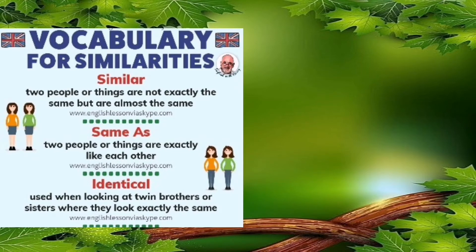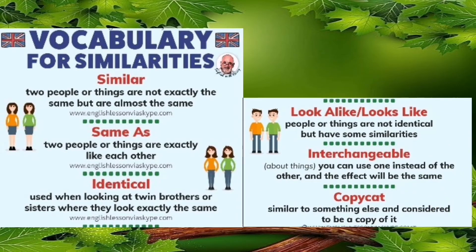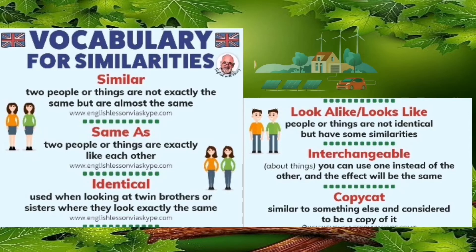Here are some vocabulary words for similarities. The first one is 'similar,' which means two people or things are not exactly the same but are almost the same. Second, 'same as' means two people or things are exactly like each other. Third, 'identical' is used when looking at twin brothers or sisters who look exactly the same. Next, 'look alike' or 'looks like' means people or things are not identical but have some similarities. 'Interchangeable' means about things you can use one instead of the other, and the effect will be the same. And the last one is 'copycat,' which means similar to something else and considered to be a copy of it.